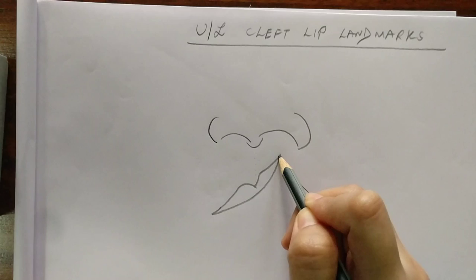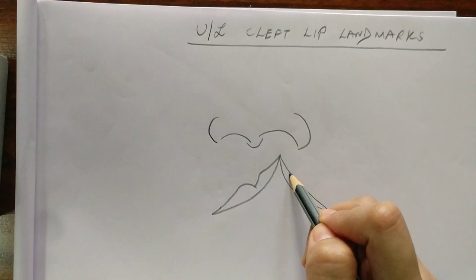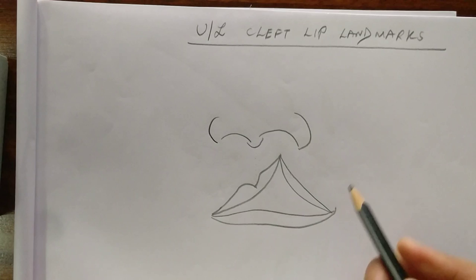I am demonstrating an incomplete cleft lip, and when you draw the vermilion on the cleft side it actually starts to thin at a certain level, and then the lower lip can be easily completed.